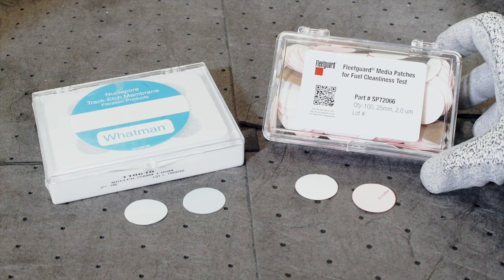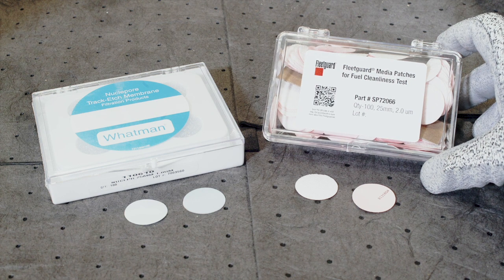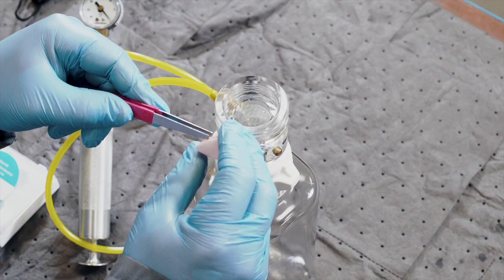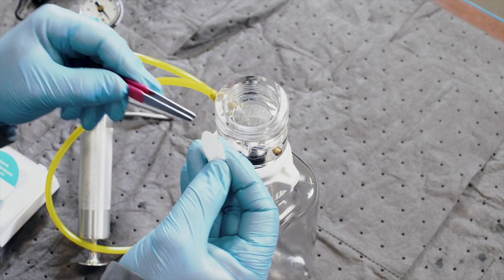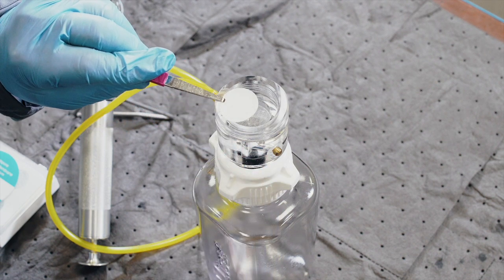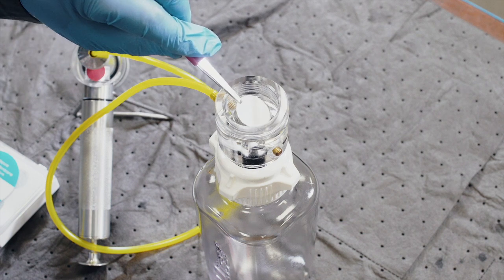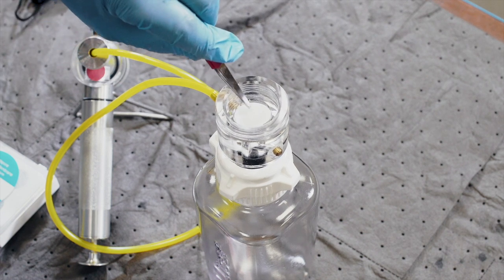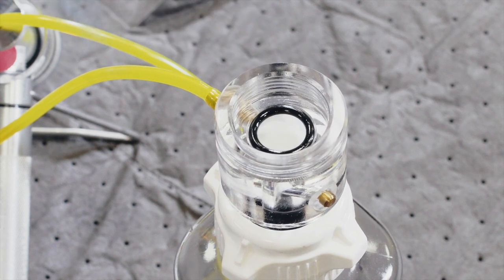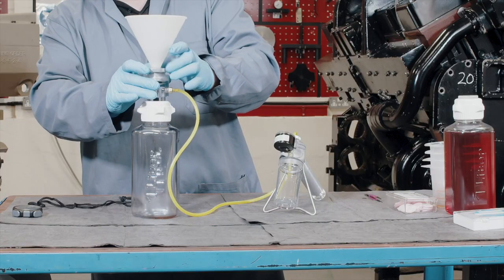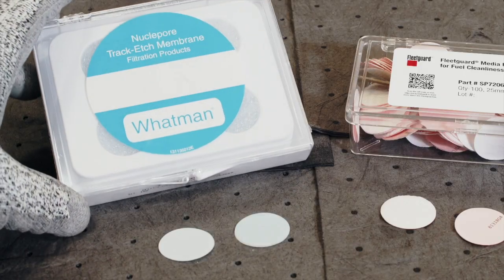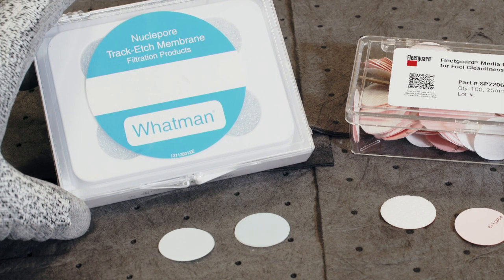For this test you can use either the two micron or one micron patch, and only one patch is required for the entire test. Remove any coloured cover or separated sheets from the media and then carefully place the media with the grooved side facing the metal screen. Fit the small diameter o-ring on top of the filter media and then tighten the funnel securely in place. If using the one micron media, ensure that the shiny side is facing up.